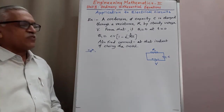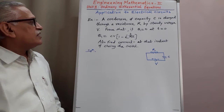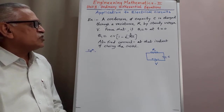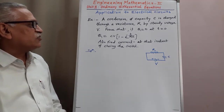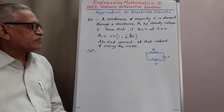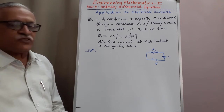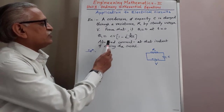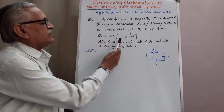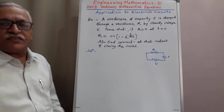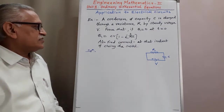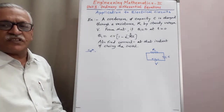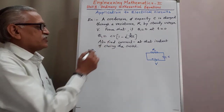Let us solve one more problem. A condenser of capacity C is charged through a resistance R by steady voltage V. Then prove that if Q is equal to 0 when T is equal to 0, then Q is equal to CV times (1 minus e raised to minus T by RC). Also find the current at the instant of closing the switch.